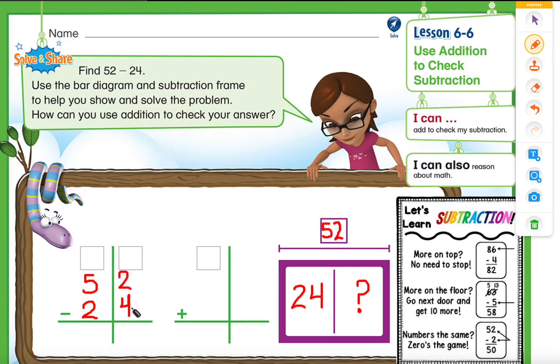So what do we do when we have more on the floor? More on the floor, you go next door and get 10 more. So we are going to go next door and get 10 more. Before it had 5 tens. When we took one ten away, it ended up having 4 tens. And the 10 that we got from the next one makes this number 12. So now we have 12 and 4 tens.